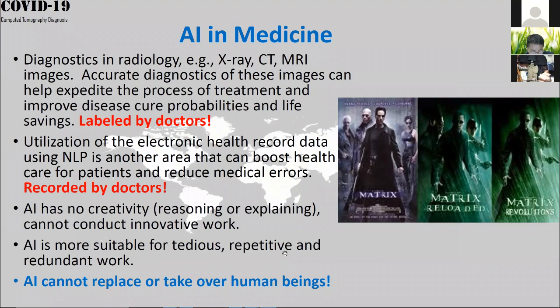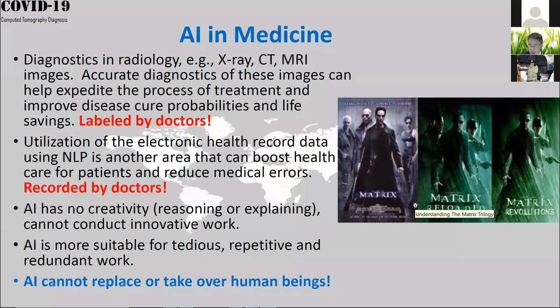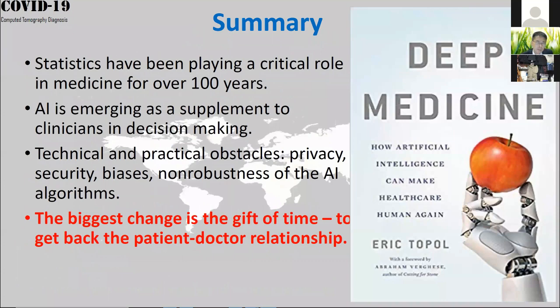AI cannot replace human beings — not like the movie Matrix. To summarize, I view convolutional neural networks and deep learning as a flexible statistical model. Statistics has played a critical role in medicine for hundreds of years, and AI is now emerging as a supplement for better decision making. But there are obstacles: privacy, security, bias, and non-robustness. Sometimes an AI system draws a wrong conclusion if you damage an image even slightly.